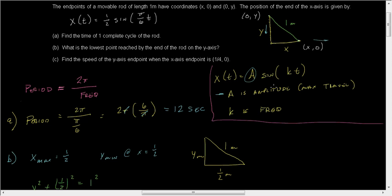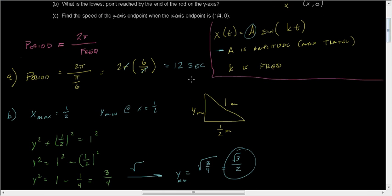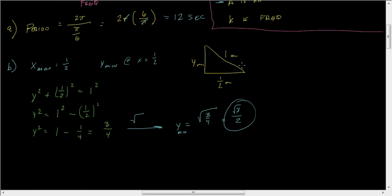We know that A is our amplitude, which is our maximum value. We know that k is our frequency. Then through the definition of period, we found that the period was 12 seconds - that's the amount of time it takes to make one cycle. After that, we found our maximum x moved is one-half, and from there we used Pythagorean theorem to find the minimum height y. On the second part of this video, we'll look at part C, which deals with the rate at which y is moving.